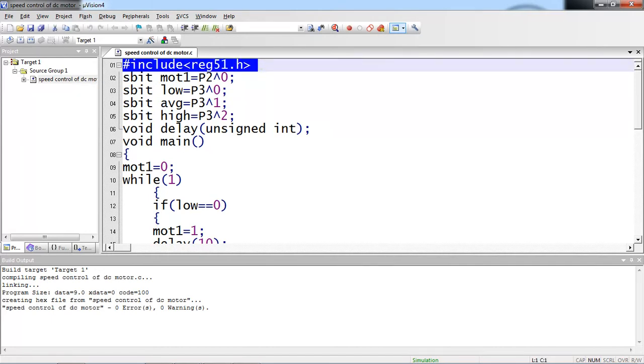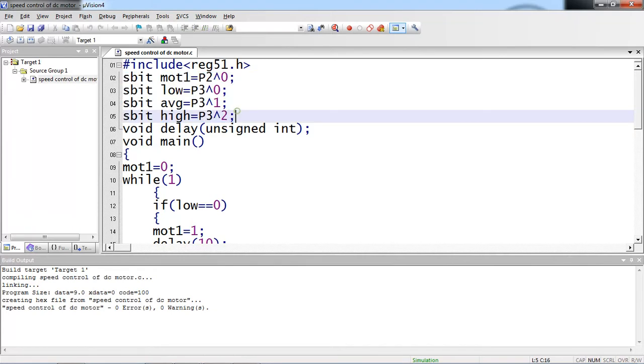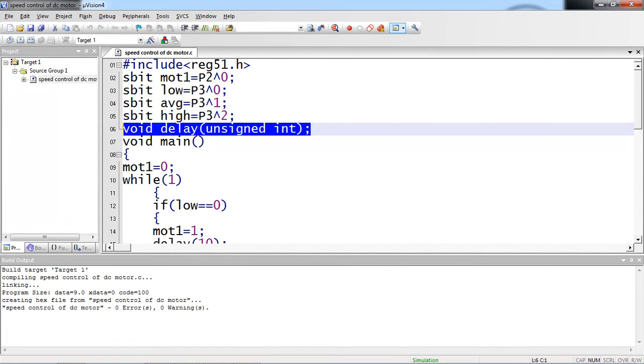This is your first line of your program: #include reg51.h, which allows to use all SFR registers from your microcontroller. These are hardware connection declarations. Motor one input I am connecting with P2.0 I/O pin from the circuit. And three hardware connections of switches or buttons: low, average, and high. I named them the same. One delay user-defined function I am taking here to maintain delay between high and low.